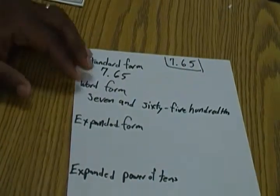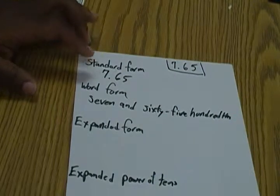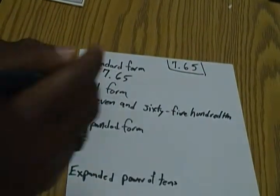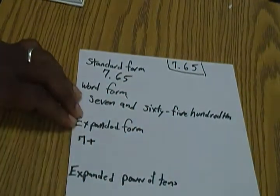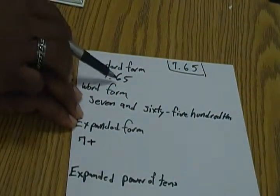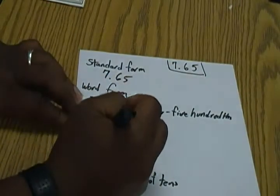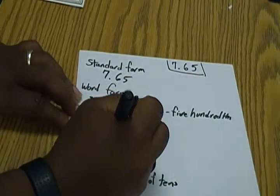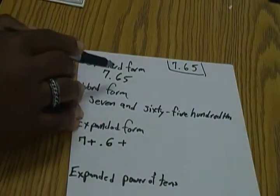All right, expanded form is taking our decimal number and kind of breaking it up. We know our seven is in the ones place, so we write just seven plus. We're going to look at our next place: six is actually in the tenths place, so we're going to write plus six tenths.